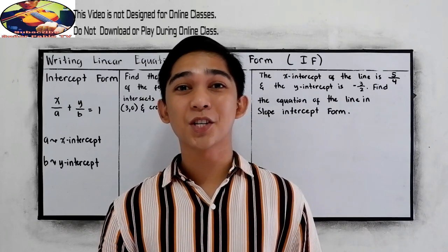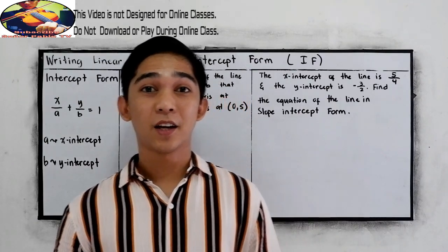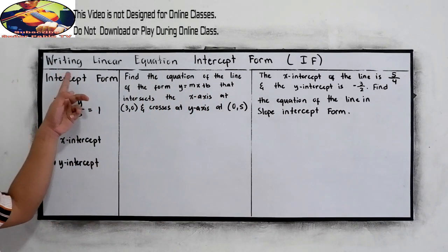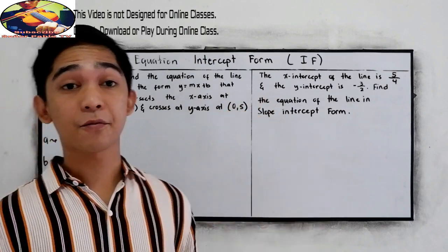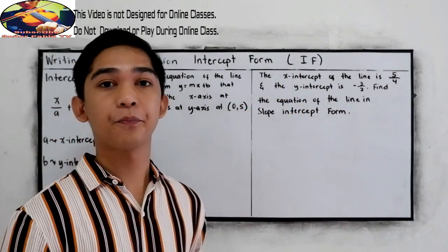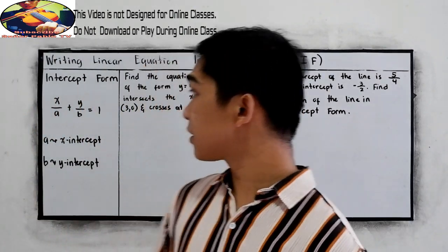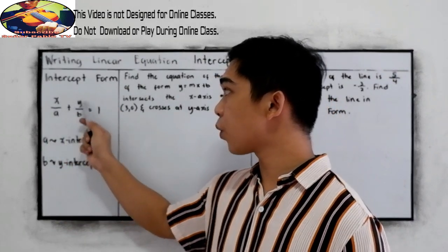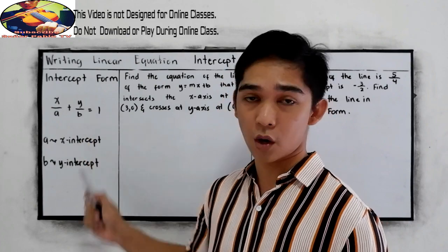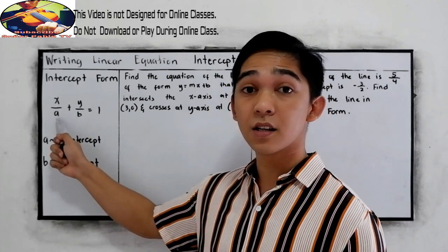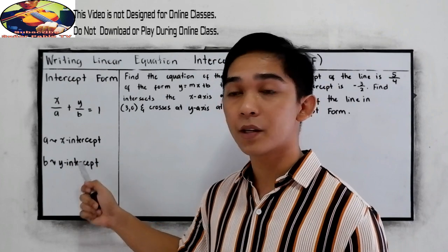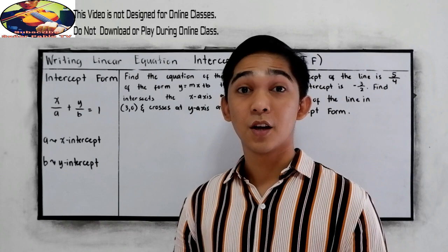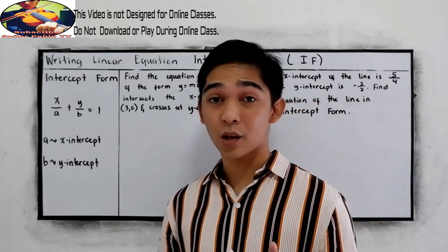Good day, everyone. Welcome to Senior Pablo TV. And for today's tutorial video, we will be discussing writing linear equations in intercept form, or IF. In the intercept form, we have x over a plus y over b is equal to 1, wherein a is our x-intercept and b is our y-intercept. To better understand, let's have the following examples.